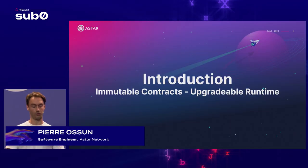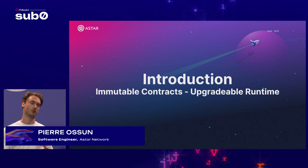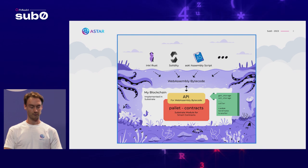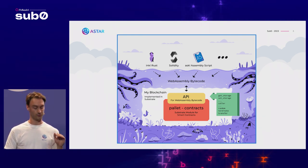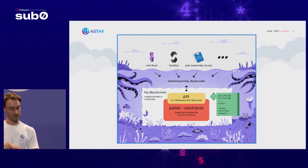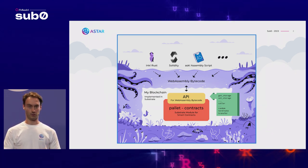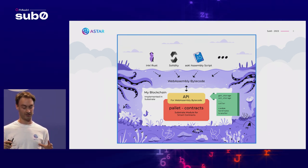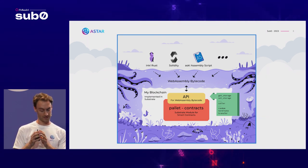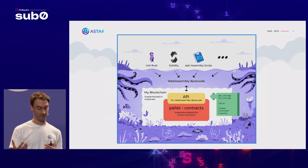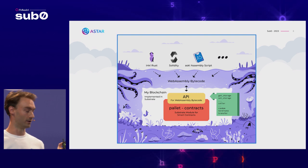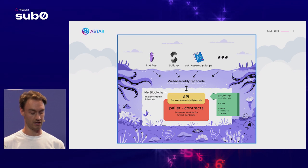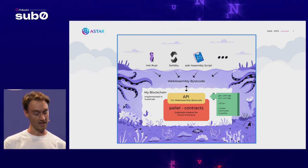As an introduction, the main constraint when you want to make contract-to-pallet interaction is that contracts are immutable and the runtime is actually upgradable. Here is a diagram of the architecture of pallet contracts. On top you have all the languages used to write Wasm smart contracts — ink!, Solidity, and AssemblyScript — that compile to WebAssembly bytecode. All the purple components are on-chain storage, and those WebAssembly blobs communicate with the runtime via the pallet contracts API in yellow. The functions this API exposes are shown in green: get storage, set storage to manage storage, and calls to get the caller address, terminate the contract, or transfer native tokens.